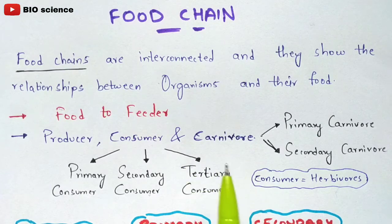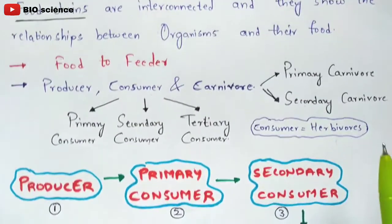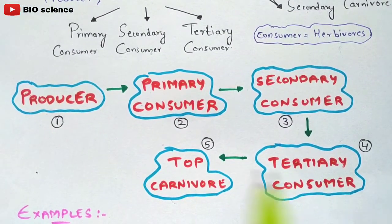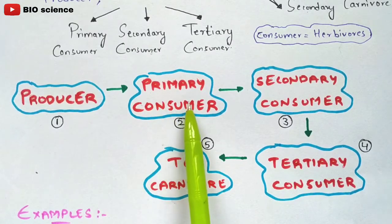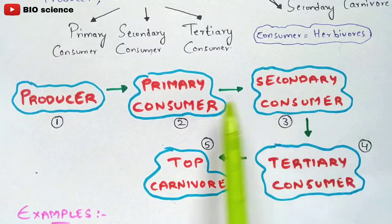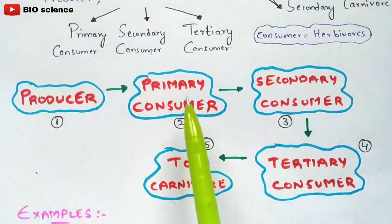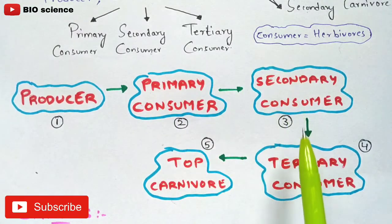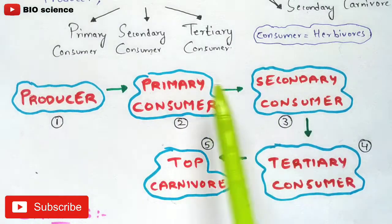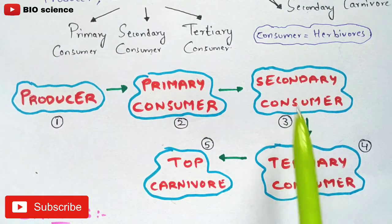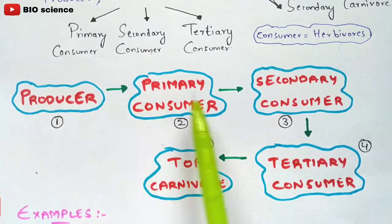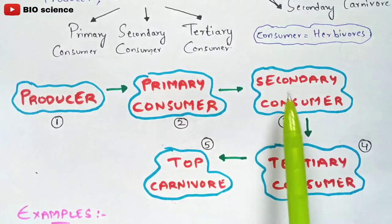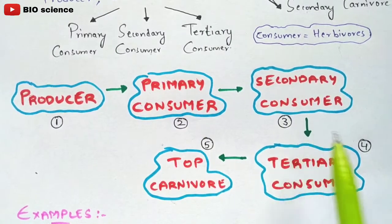Let us see by comparing with examples. You can see here: producer, consumer, consumer, consumer — these are all consumers. This is primary consumer, secondary consumer, and tertiary consumer — these three are sub-trophic levels. Rather than this, you can also write just three: producer, consumer, and carnivore. I have mentioned five here because these are the sub-trophic levels. Normally there will be primary carnivore and secondary carnivore as well.